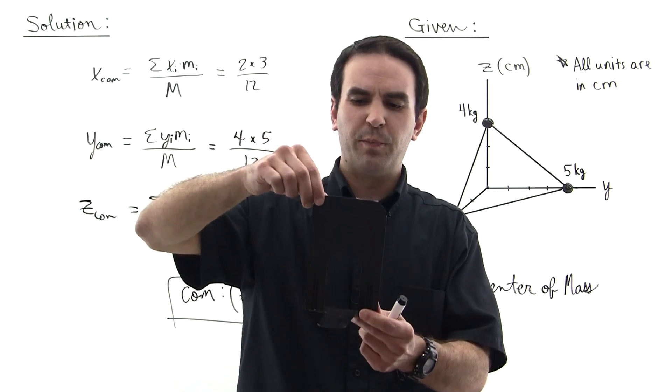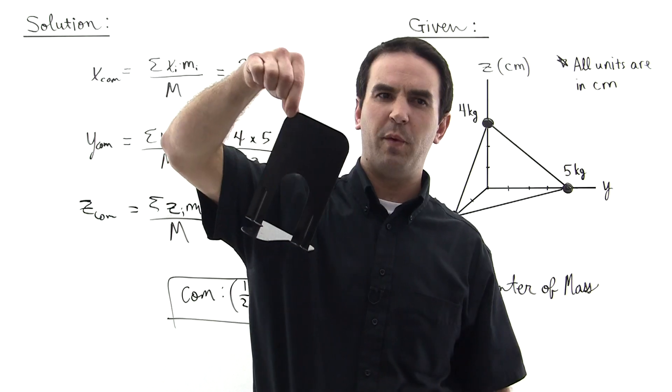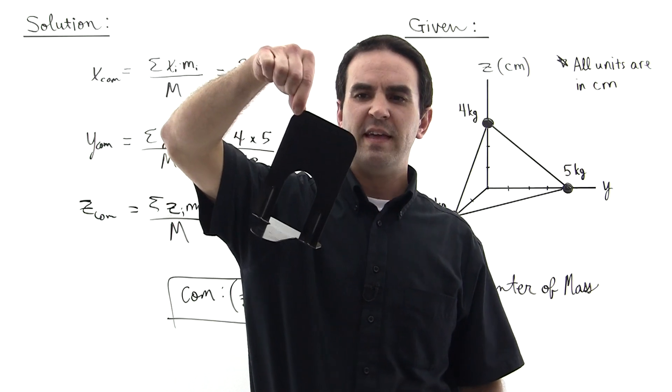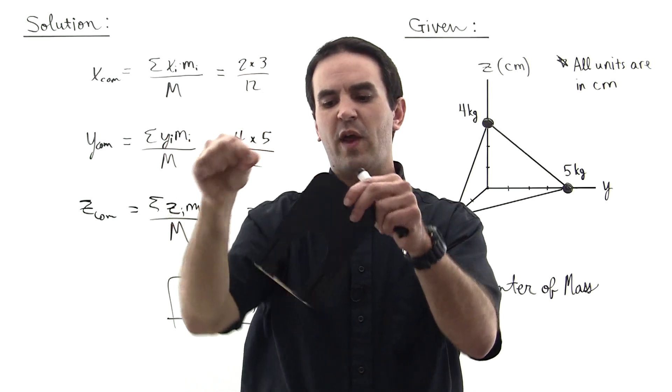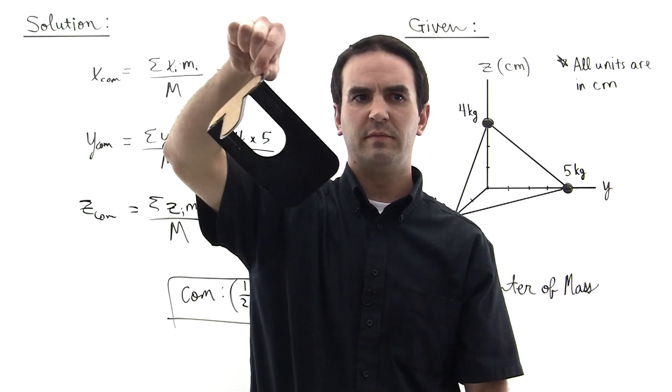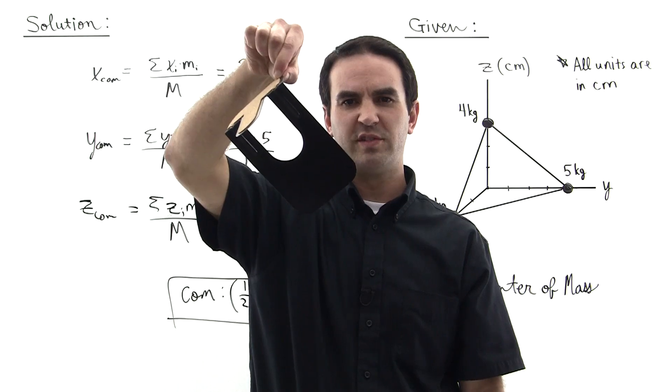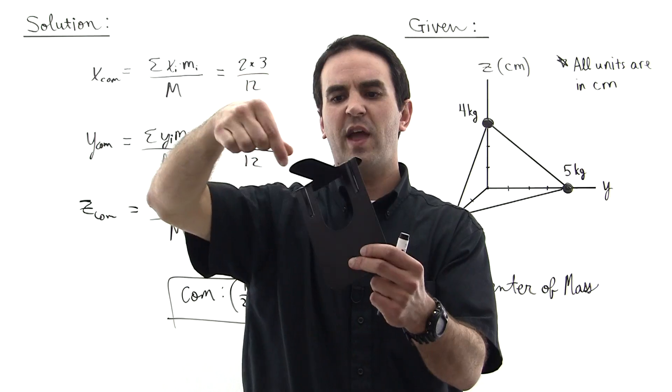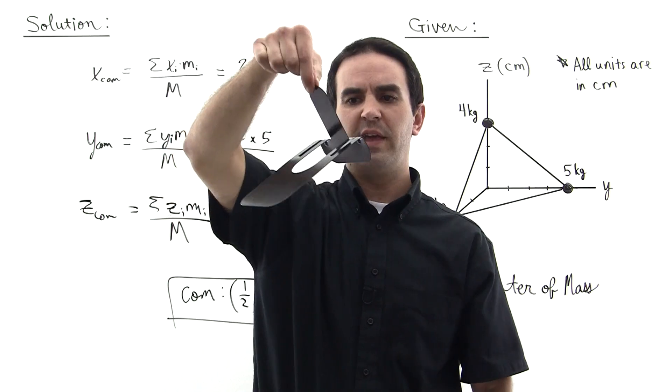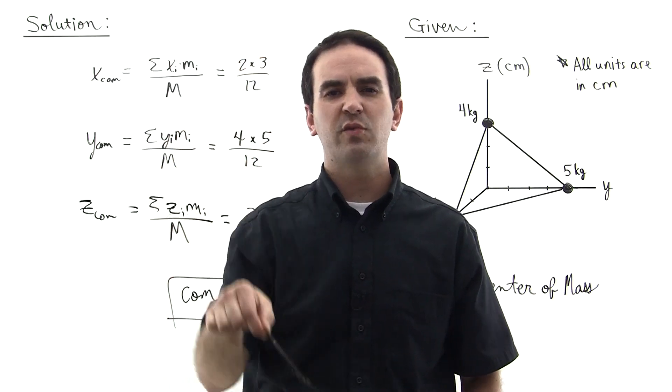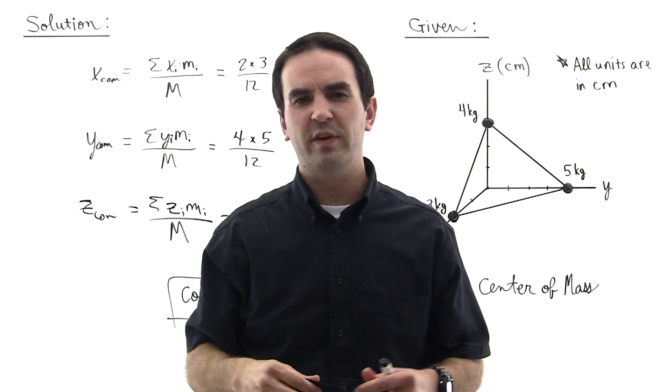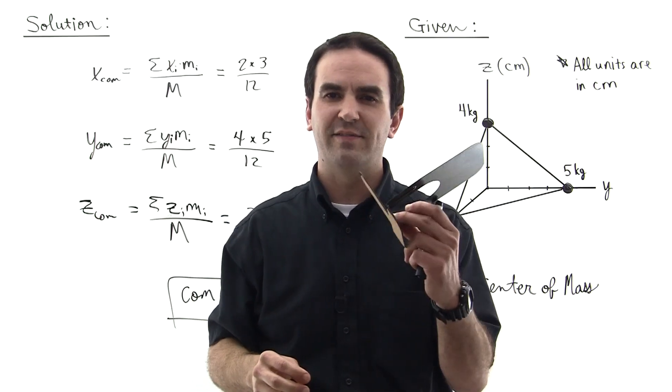We talked about how if you picked it up at one point and held it, then drew a straight line down towards the center of the earth, and then grabbed it at another point and drew a straight line down, and then grabbed it at another point and drew a straight line down. Those three lines would intersect at the center of mass of this object.